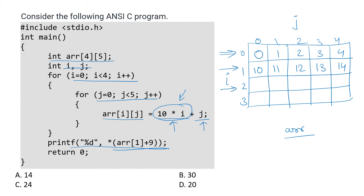Similarly for i equal to 2, this value will be fixed as 20, and adding the j values gives us 20, 21, 22, 23, and 24. Then for the last row that gives us 30, 31, 32, 33, and 34.